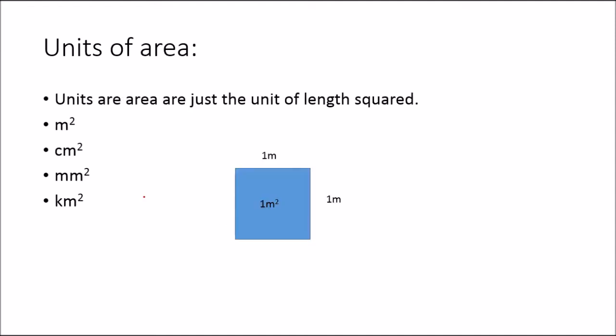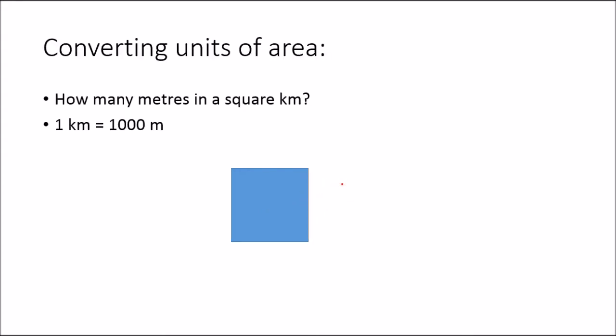Units of area are just the unit of length squared, so commonly they are meters squared, centimeters squared, or kilometers squared. A meter squared is the area of a square that is one meter on the side times one meter on the height. When we're converting, we've got to think about how many of the smaller unit there is in the bigger unit, or vice versa.